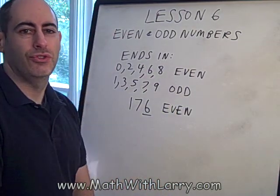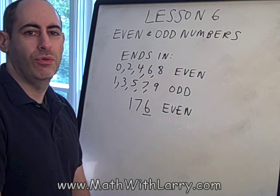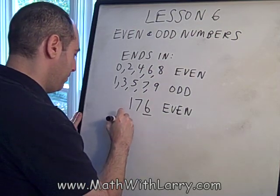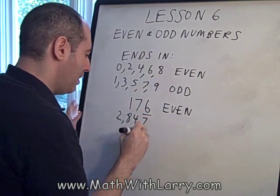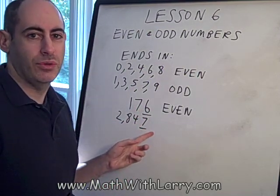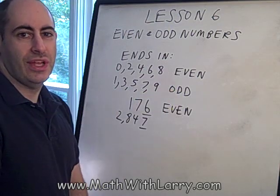Let's take a look at the number 2847. Again, all that matters is the rightmost digit, and that shows us that that's an odd number.